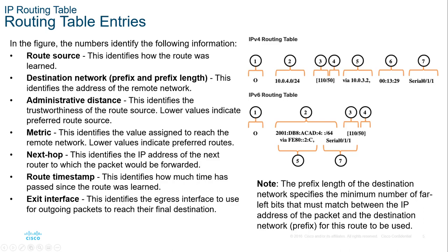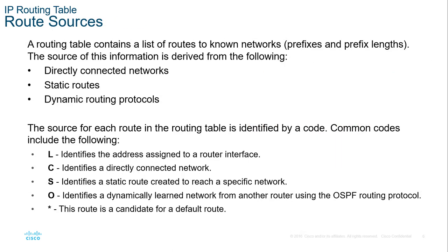Route source. They are going to be different measures. So it's either going to be directly connected, static or dynamic routing. If it's directly connected, that's going to be either L or C. If it's a static route, it should typically be denoted as S. If it is a dynamically learned route, it will be O, or a different letter depending on which routing protocol. O means it's using OSPF as the routing protocol. S is static. So as long as it's not L, C or S, you should be fine. Star will denote a default route as well.